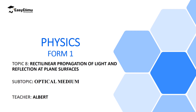Welcome to ECE LIMU Learning Simplified. In the previous lesson, we discussed light and defined it as a form of energy. We discussed the sources of light — luminous sources, which produce their own light, and non-luminous sources, which reflect light from luminous sources. We also discussed how light travels as rays and beams.